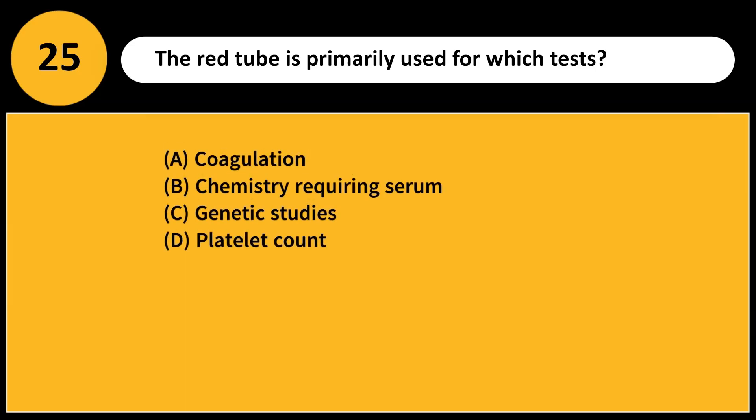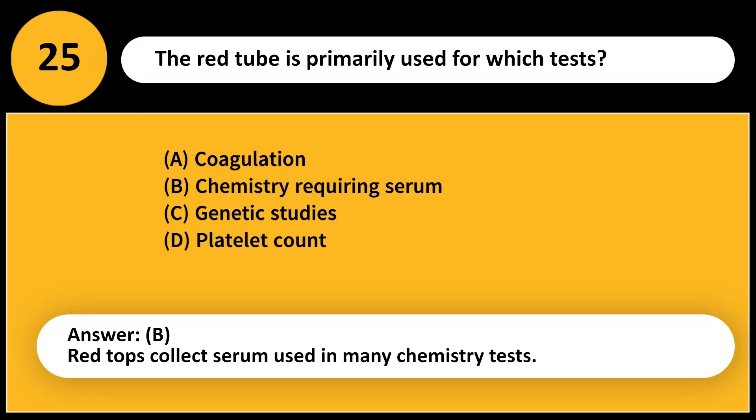The red tube is primarily used for which tests? A. Coagulation. B. Chemistry requiring serum. C. Genetic studies. D. Platelet count. Answer: B. Red tops collect serum used in many chemistry tests.